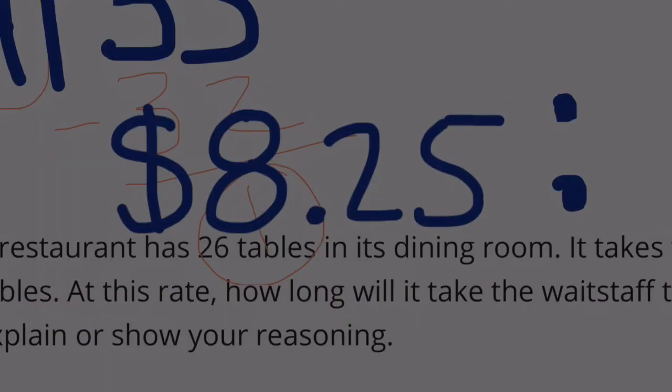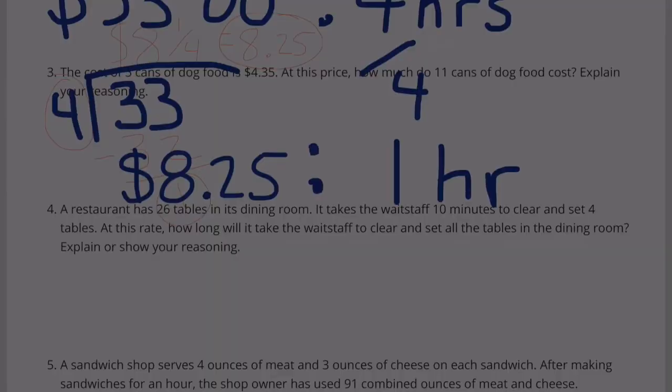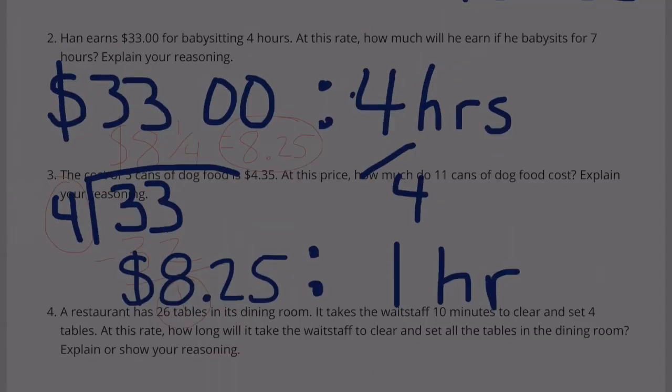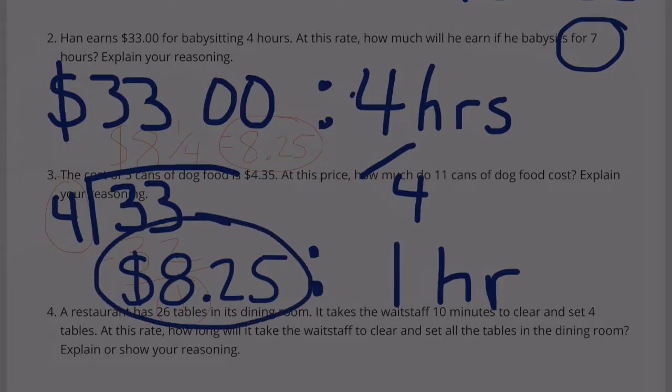$8.25 for each hour work. The question asks how much will he earn for babysitting 7 hours? So we could do 7 times 8.25, or I already know that he's making $33 for 4 hours. We need to add 3 more hours to 4 hours to make it 7 hours. In other words, we need to add $8.25 three times to 33.